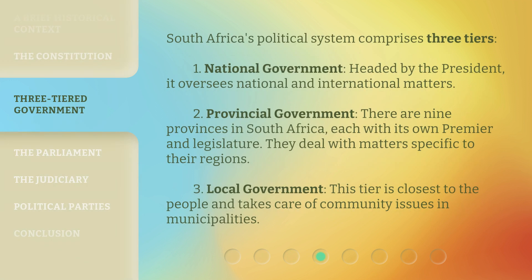South Africa's political system comprises three tiers. One: national government, headed by the president, which oversees national and international matters. Two: provincial government — there are nine provinces in South Africa, each with its own premier and legislature, dealing with matters specific to their regions. Three: local government, the tier closest to the people, which takes care of community issues in municipalities.